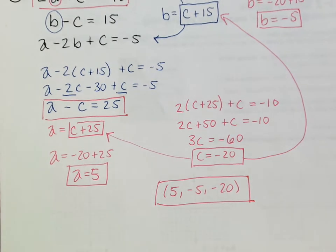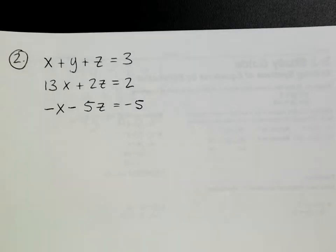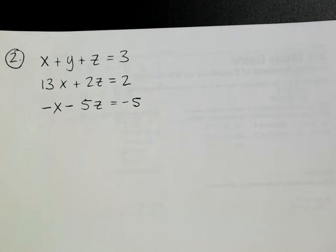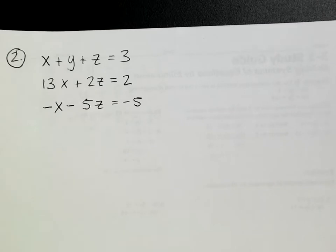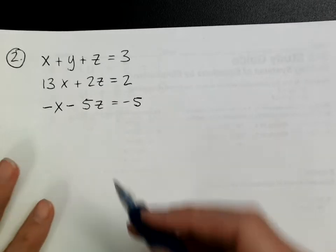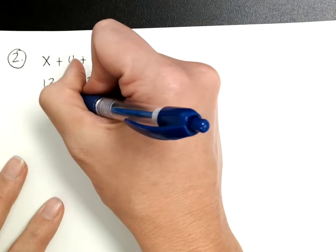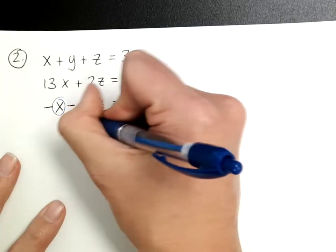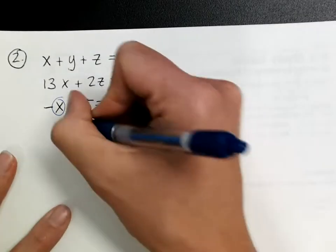Looking at question 2, it's a little bit more complicated but not too much. Two of the three equations already involve only x and z, so it's easiest to solve for x in one of those. Moving terms around gives x equals something in terms of z.